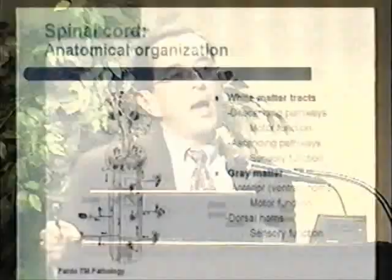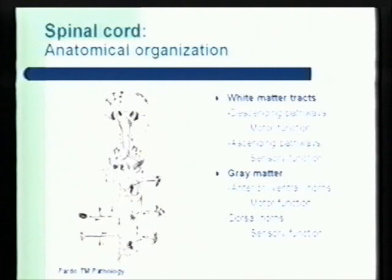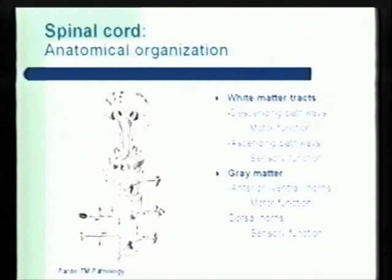To introduce pathological studies, I want to show an image about the anatomical organization of the spinal cord. This is a beautiful drawing done more than 100 years ago by a Spanish scientist called Santiago Ramón y Cajal. He spent a lot of time studying the histology of the nervous system, not only in humans but also in animals, and was the first person who showed us the structure of the nervous system. He did beautiful drawings of the anatomy of the spinal cord, which you know well from studying transverse myelitis.